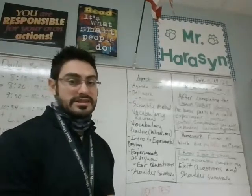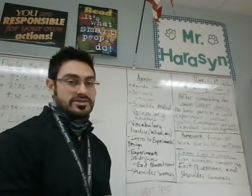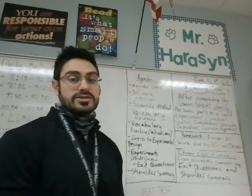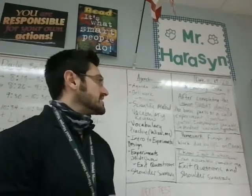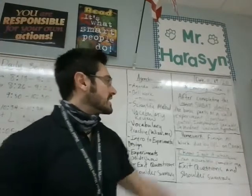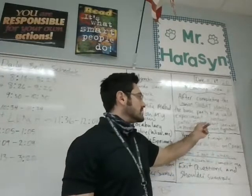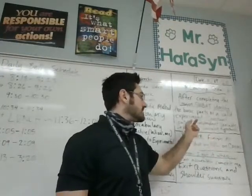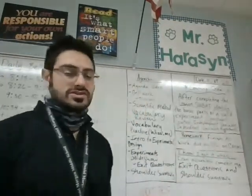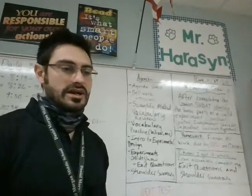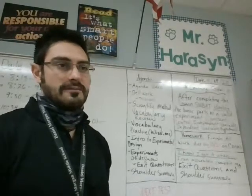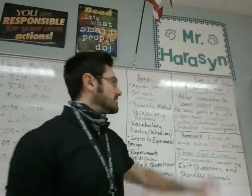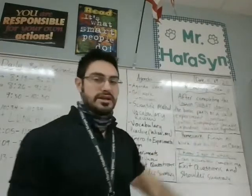Anyone can run an experiment that doesn't give them valid results, but if you want valid results, you've got to have certain things in there. Those things include a constant, a control, independent variable, dependent variable, hypothesis. There's also things like repeated trials and a conclusion, but the main things that have to be there in the process of the experiment are right here.